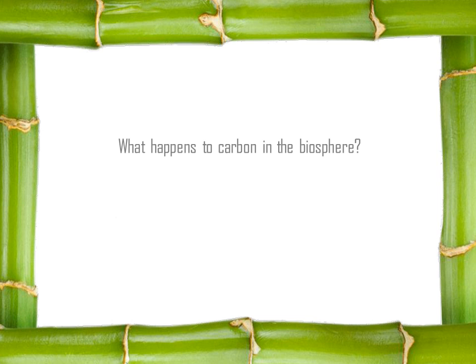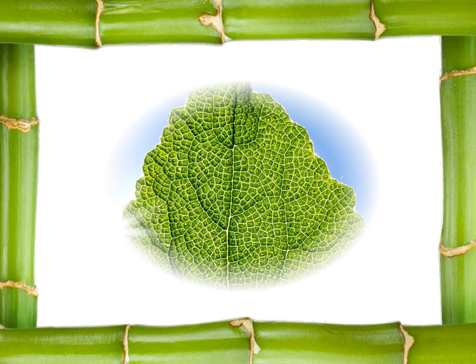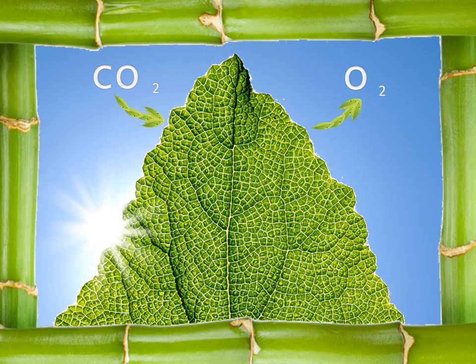So what happens to carbon in the biosphere? It starts off in the atmosphere. Plants have evolved to use the sun's energy to remove carbon dioxide from the air and break it apart. They use the carbon with water and other elements to grow their structure or store energy as fuel, and they release the oxygen back into the atmosphere as a by-product. This is the process of photosynthesis.